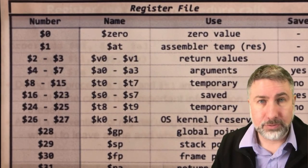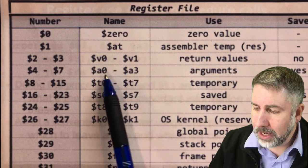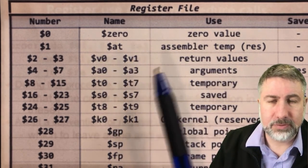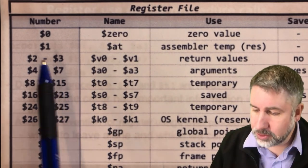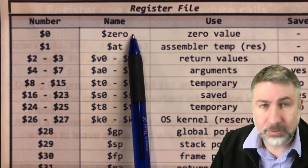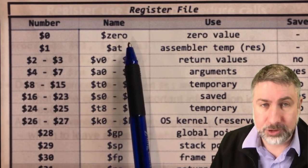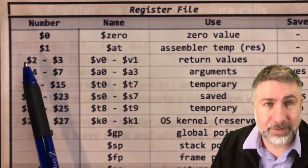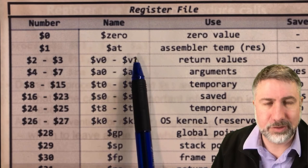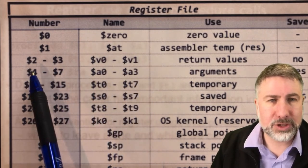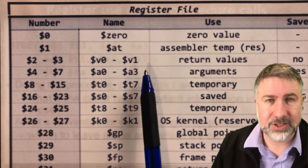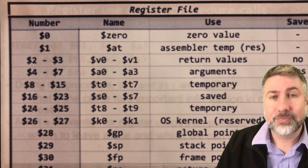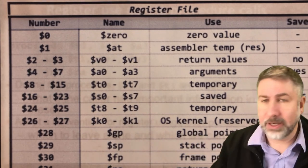We are going to use A registers for arguments and V registers for return values. Registers 0 and 1 are reserved special registers. After that the next registers are your return values V0 and V1 (registers 2 and 3), and your arguments A0 through A3 (registers 4 through 7). So you put some data into an A register and then return data via a V register.